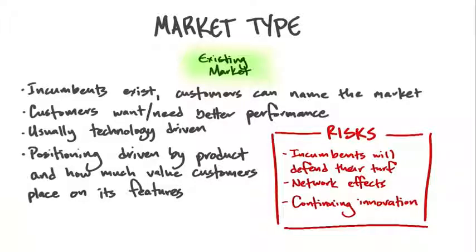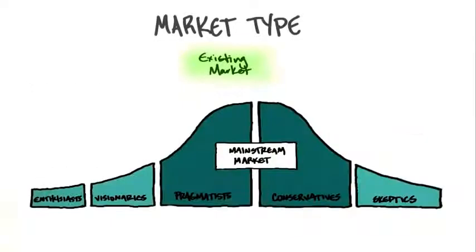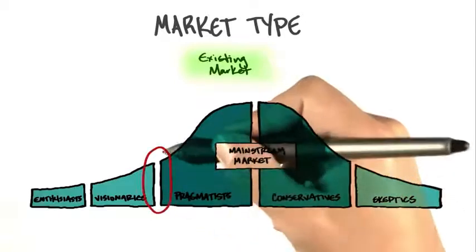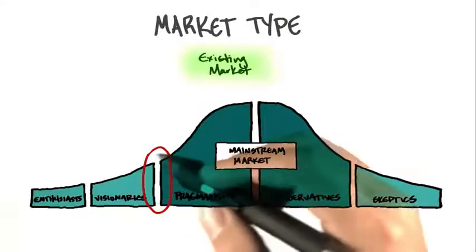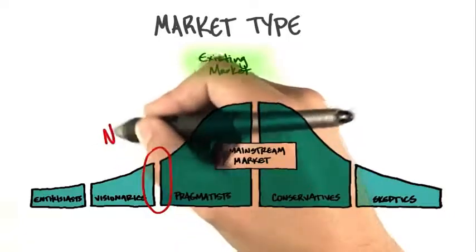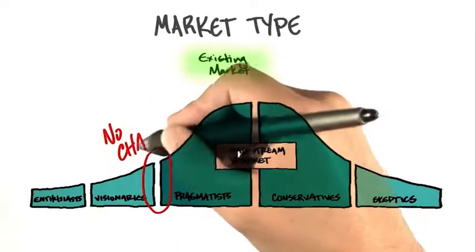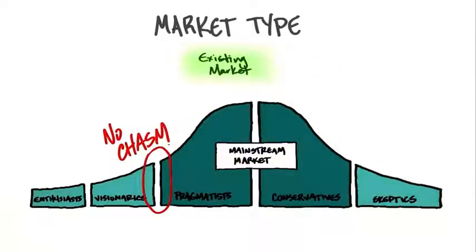One of the interesting things is trying to figure out what sales look like and what's the adoption rate in a new market. It turns out one of the interesting curves for startup companies is a technology lifecycle adoption curve popularized by Jeff Moore in a book called Crossing the Chasm. Moore postulated that there was a gap — a chasm — between visionaries and the mainstream pragmatic and conservative market. But in an existing market, that chasm between early adopters and the mainstream is very small or nonexistent.